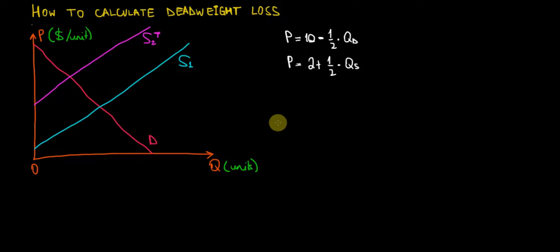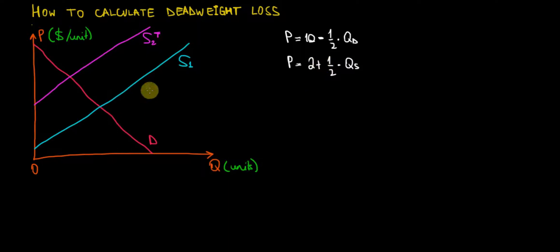In this video I would like to show how we can calculate the deadweight loss that happens on the market after the government imposes a specific tax on production. For that I took two hypothetical demand and supply curves and I already drew them. However, the mathematical computation I want to do live now so that you can follow along and see the method behind it.